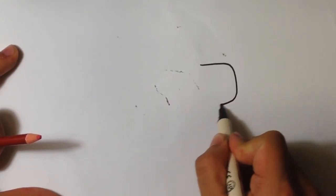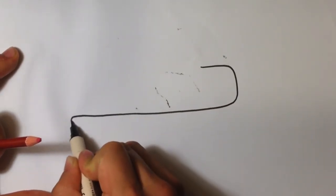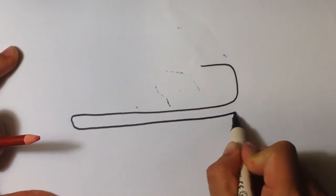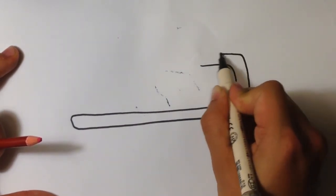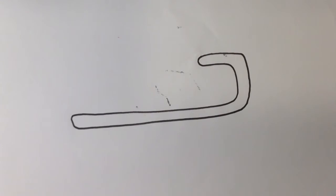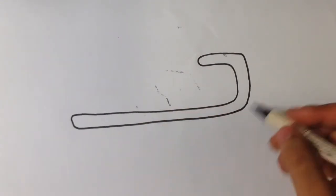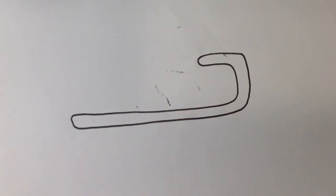So essentially, a candy cane is a hook shape. And what you can do is you can actually outline it with a line here, or you can just kind of color it in there.